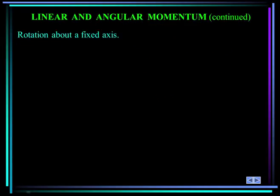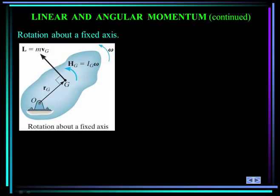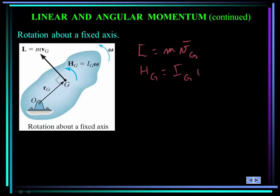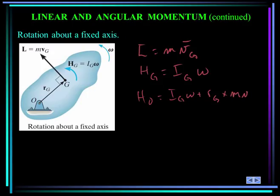The next special case is rotation about a fixed axis. We can write the linear momentum as mass times the velocity of the mass center, and the angular momentum about the mass center as the mass moment of inertia about the mass center times omega. It's sometimes convenient to compute the angular momentum about the center of rotation O, in which case it will be I_G * omega plus R_G cross M * V_G, where R_G is the vector from O to G. These are all vector equations.